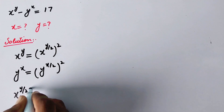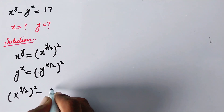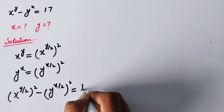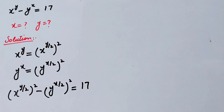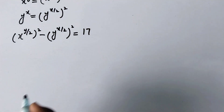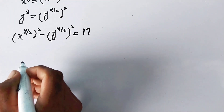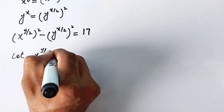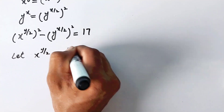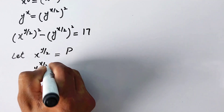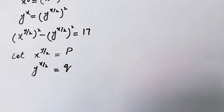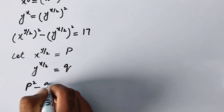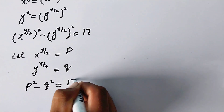So we can now write the equation as (x^(y/2))² minus (y^(x/2))² is equal to 17. To simplify, we let P = x^(y/2) and Q = y^(x/2), so our equation becomes P² minus Q² = 17.